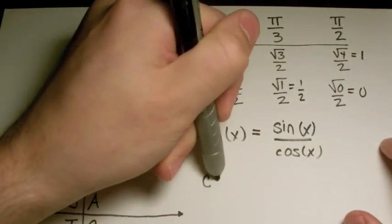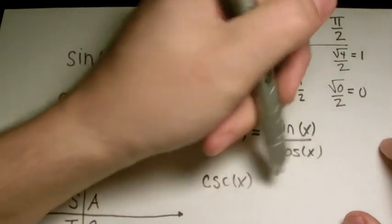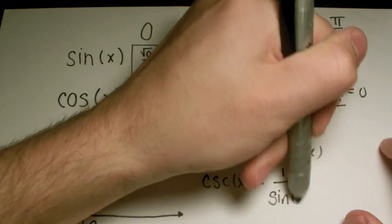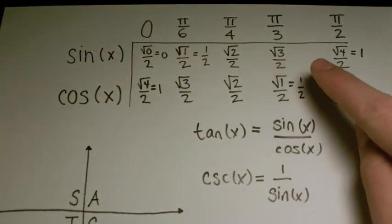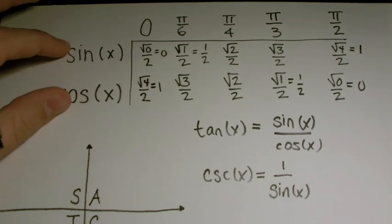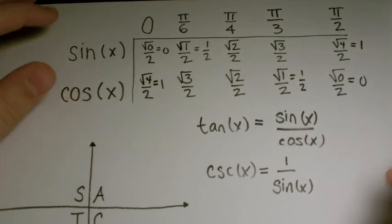And cosecant of x is equal to 1 over sine of x. So from these angles up here, you can figure out tangent, cosecant, secant, you can figure out any trig functions. And cotangent as well. So all you need to do is know sine and cosine. That's it. And then you know all the trig you ever need to know, ever.